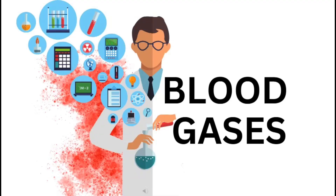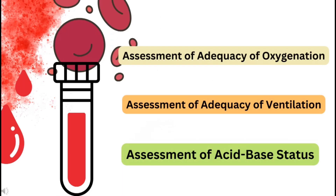Today's lecture is about the analysis of blood gases and their significance. Before the collection of blood for blood gases, we should understand why this test is important. This test is important to check the oxygenation or saturation of oxygen in our body, because oxygen is a major gas for survival of the body and to prevent hypoxia. For the proper working of the brain and other vital organs, we need oxygen, so assessment of adequacy of oxygenation is a very important step.